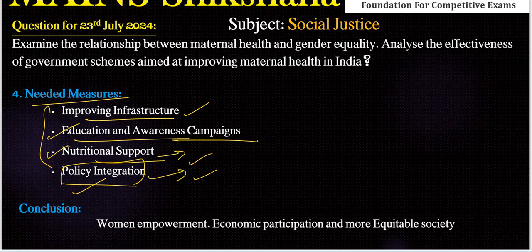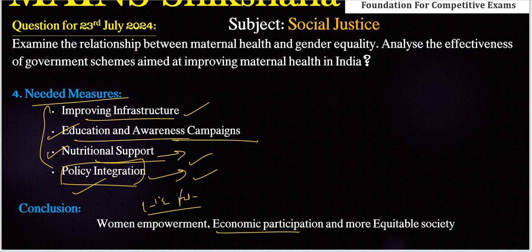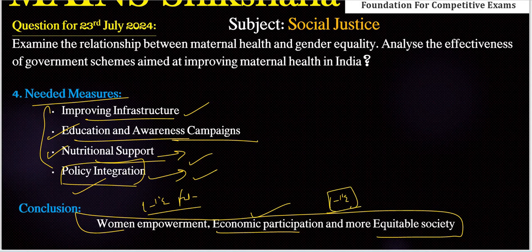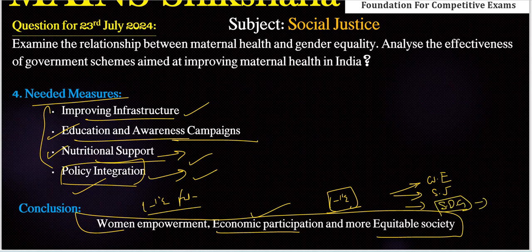At the end of the needed measures, we need to conclude with a one-line futuristic note. For example: with continued focus on innovation, India can pave the way for a future where maternal health and gender equality go hand in hand. We can connect this conclusion with goals like women empowerment, social justice, equitable society, gender equality, and Sustainable Development Goals.